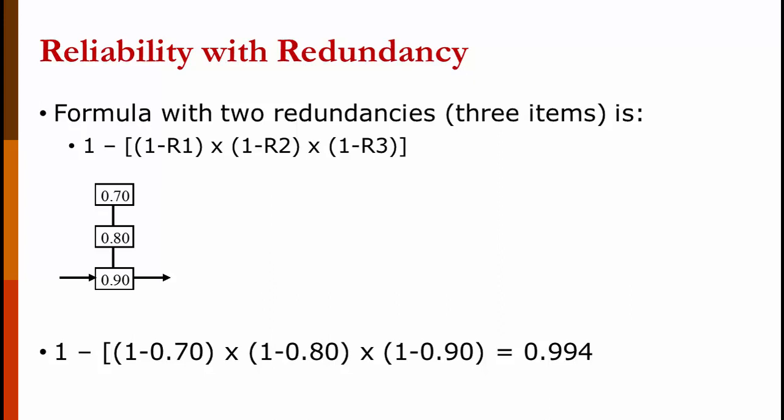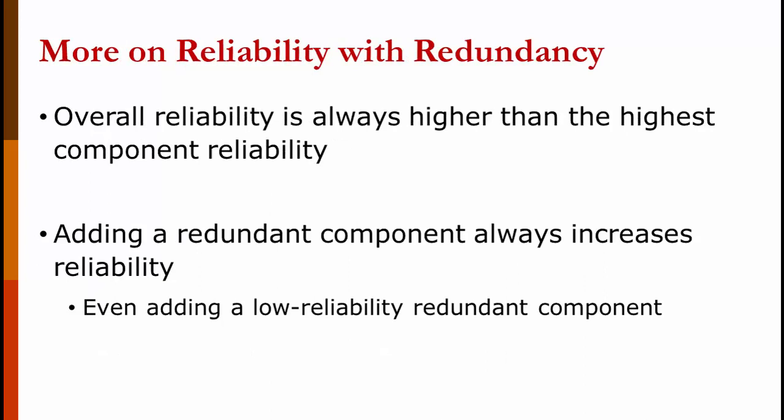To figure out reliability with redundancy, I first convert each reliability to its complement. So the 70% becomes 30%, the 80% becomes 20%, and the 90% becomes 10%. Then multiply all those numbers together and subtract them from one. When you have redundancy, the overall reliability of that set is always higher than the highest reliability. In addition, adding another redundancy, even one with low reliability, always increases the overall reliability.